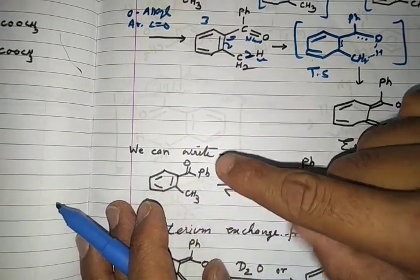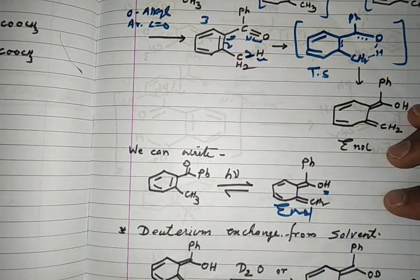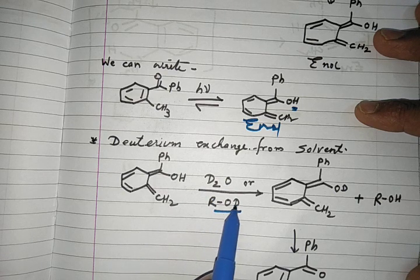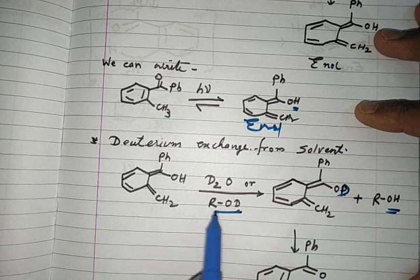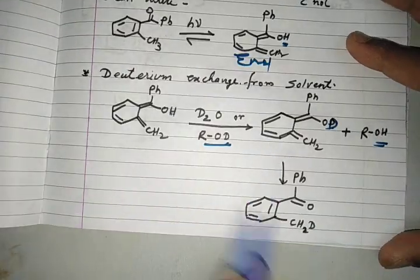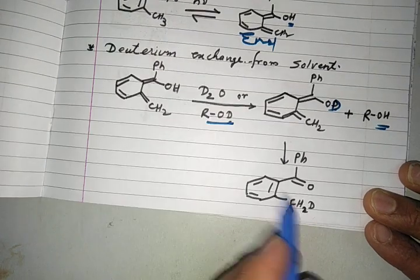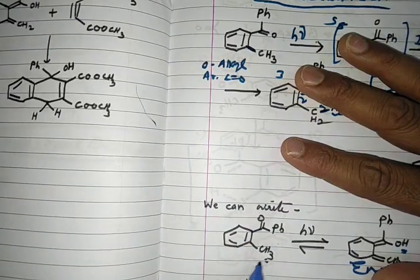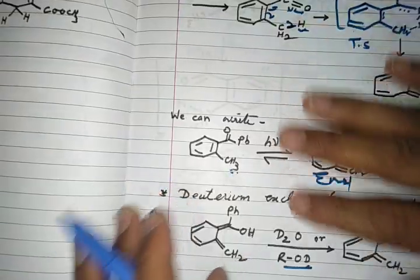From this enol form, we have an alcohol. If we add a protic solvent such as D₂O (deuterated water) or deuterium, there is an exchange of hydrogen with deuterium. When the enol reverts to the keto form, deuterium is introduced at the benzylic carbon — this is how deuterium is incorporated at the benzylic position via this mechanism.